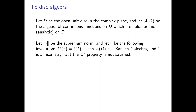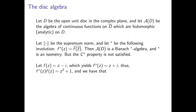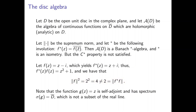However, A(D) is not a C-star algebra because the C-star condition is not satisfied. For example, take f(z) = z − 1 − i. Then the star of f is z + i, and f-star times f evaluated at z equals z² + 1. The norm of f is 2, so the norm of f squared is 4, but the norm of f-star·f is 2. Since these are not equal, the C-star condition fails.